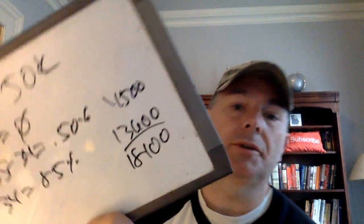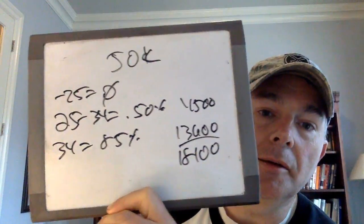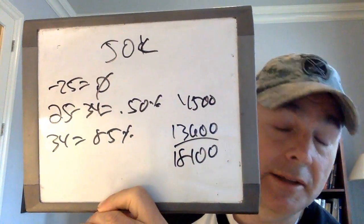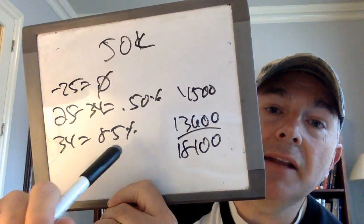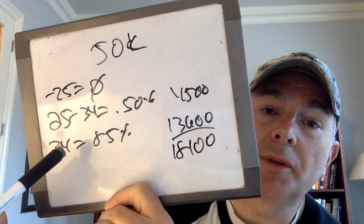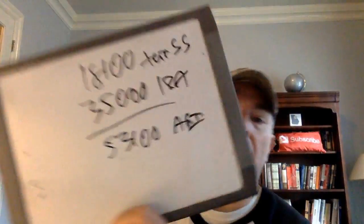So now we've got $13,600 plus $4,500 — $18,100 of your social security amount would be subject to taxation. Remember: $50,000 minus $25,000 leaves $25,000. The next $9,000, from $25,000 to $34,000, is taxed at 50%, so that's $4,500. The next amount above $34,000 — $50,000 minus $34,000 is $16,000 times 0.85, that's $13,600. Add those two together: $18,100 of your social security benefit is subject to taxation. $18,100 plus your $35,000 IRA distribution gives you your AGI.